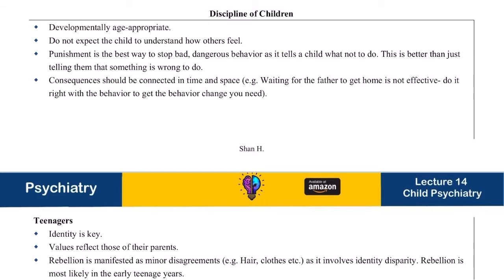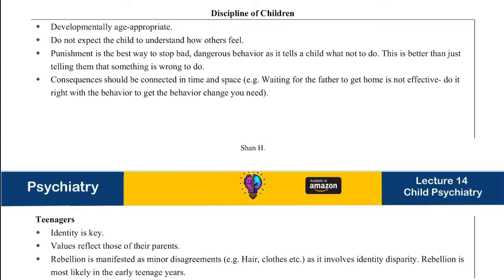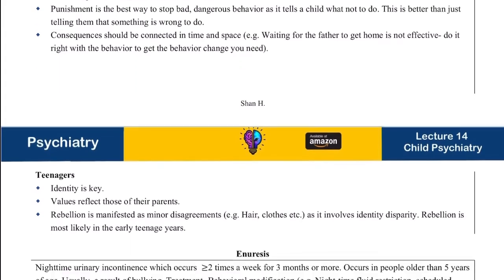Regarding discipline in children: children are egocentric — they think the world revolves around them and cannot understand how others feel. Punishment is the best way to stop bad or dangerous behaviors, as it conditions the child on what not to do. It is important that consequences are connected in time and space — don't wait for the father to come home to punish the child. You do not tell them 'wait until your father gets home.'